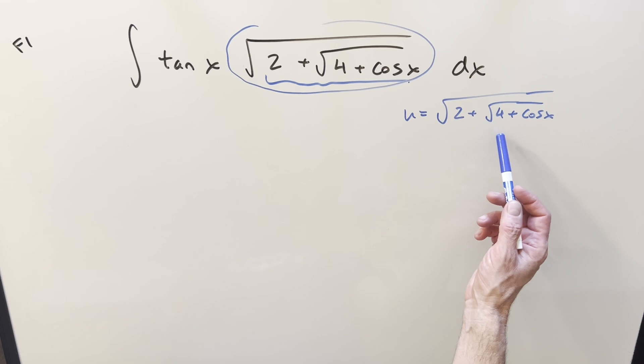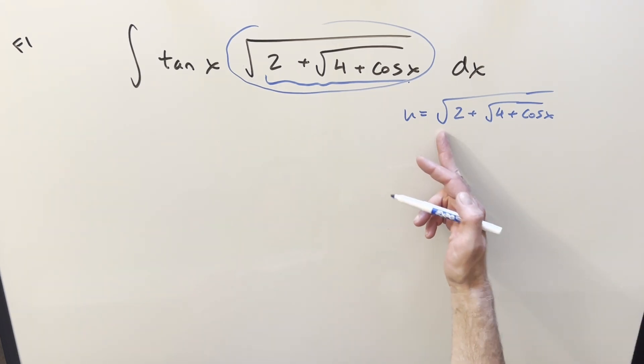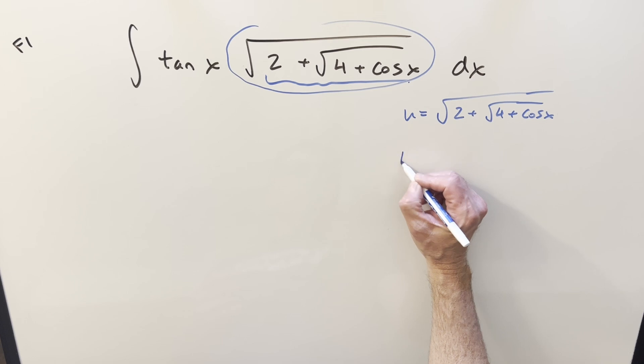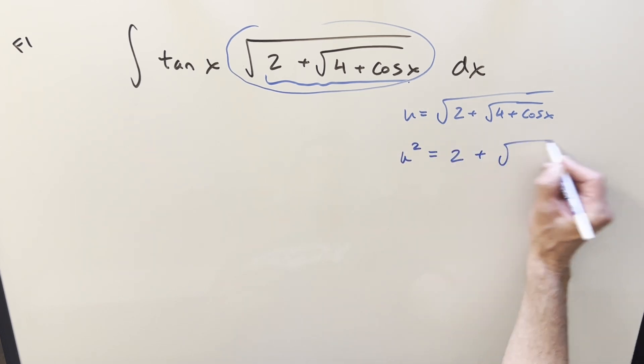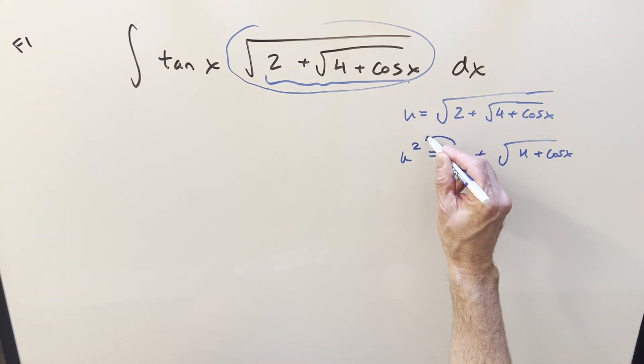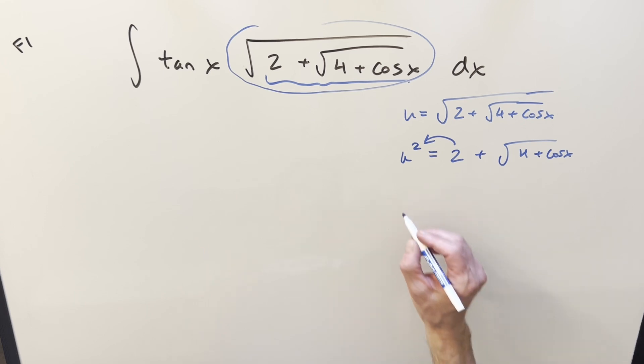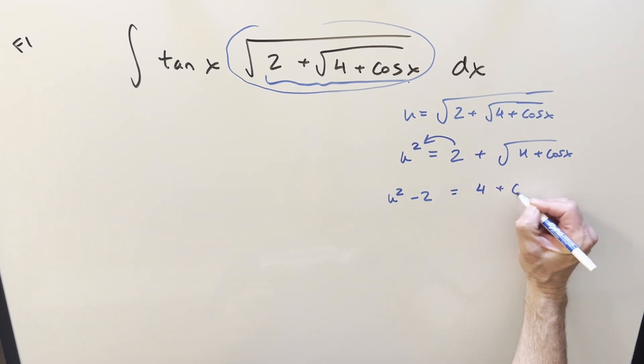I don't think I want to try to take a derivative of all this, so what I tried to do instead was simplify it first. So first I can square both sides and we get u squared equals 2 plus square root 4 plus cosine x. Then I can bring the 2 on the other side of the equation and square everything again.